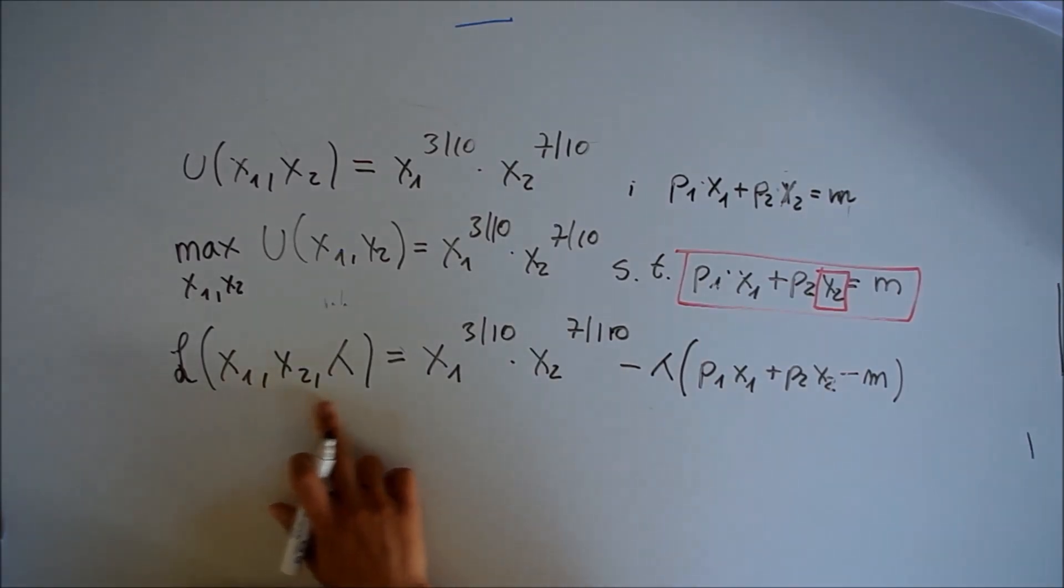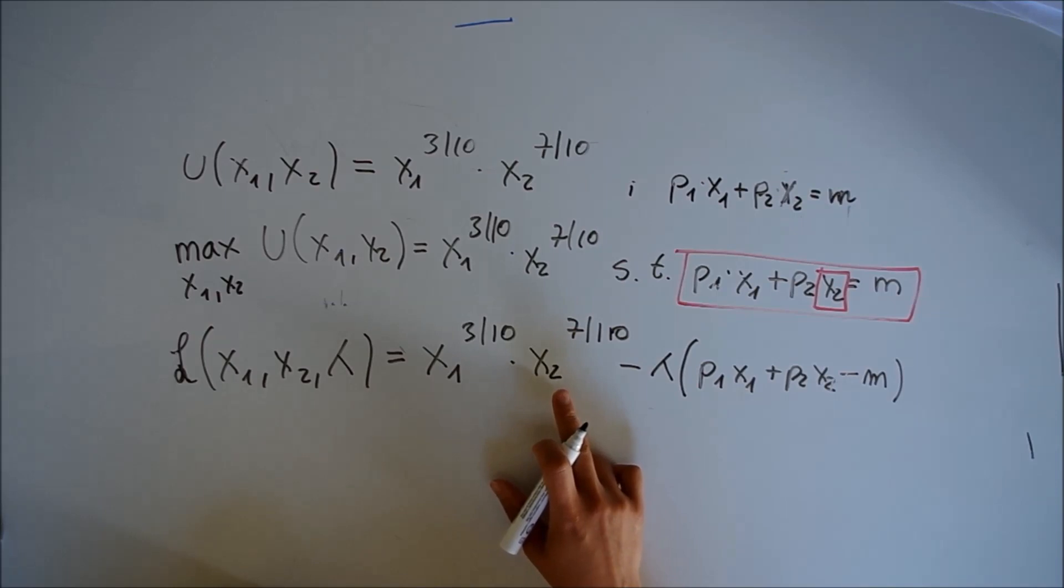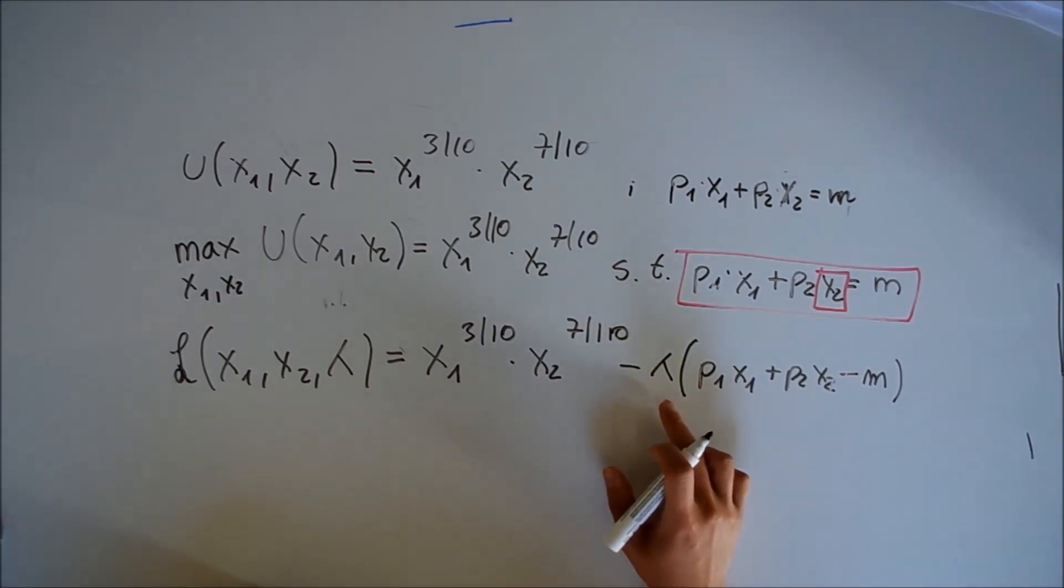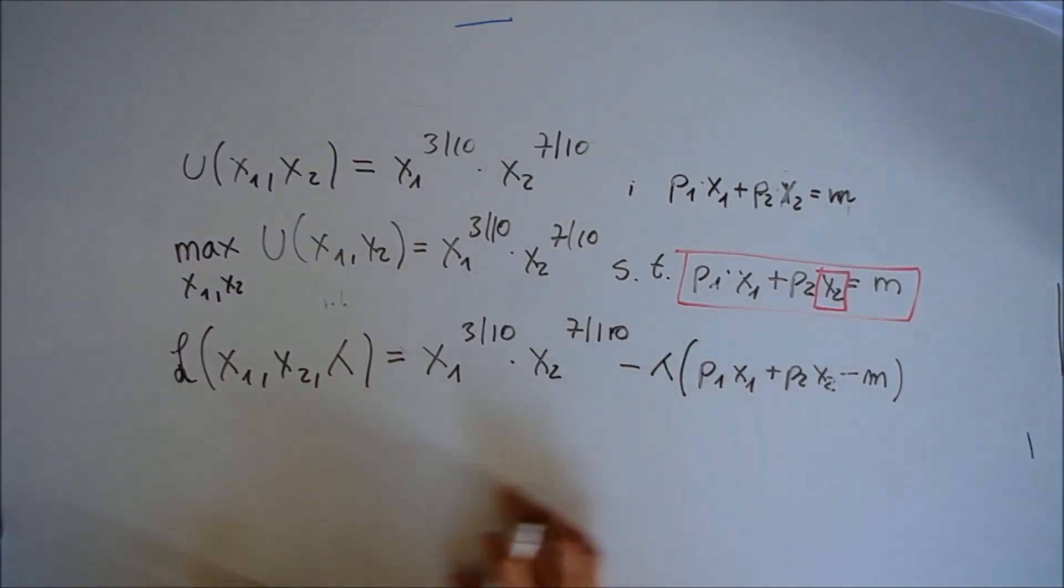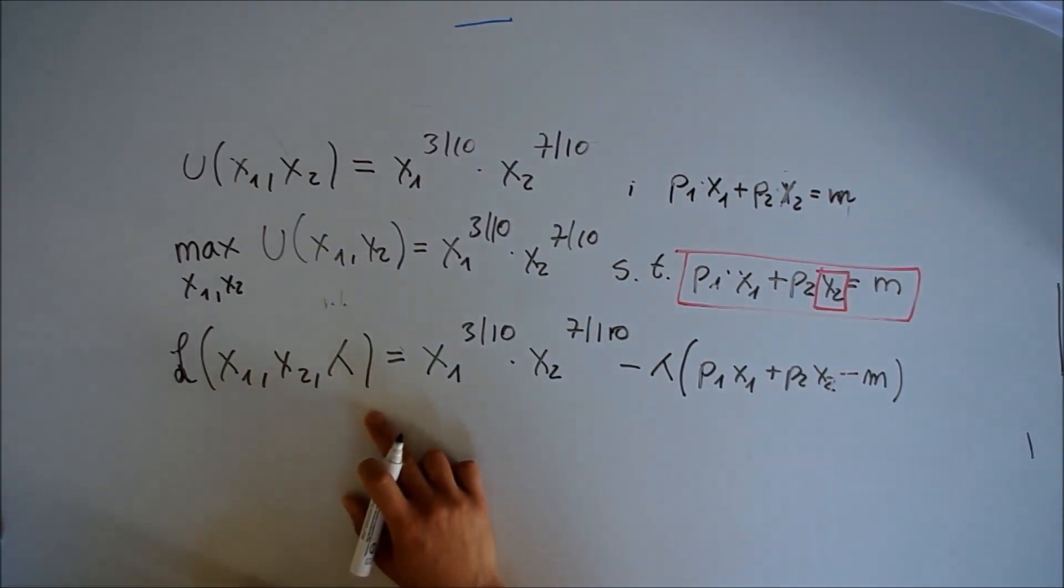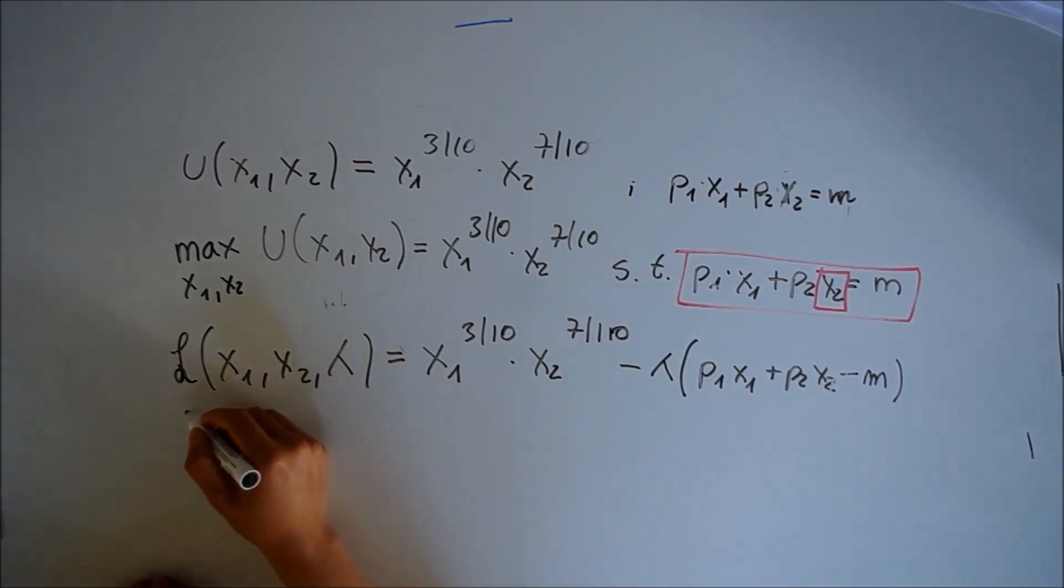The objective function has three arguments: L(x1, x2, λ) = x1^(3/10) * x2^(7/10) - λ(p1*x1 + p2*x2 - M), where lambda is a shadow index for the scarcity of the good. With three arguments we need three partial derivatives, starting with respect to x1.